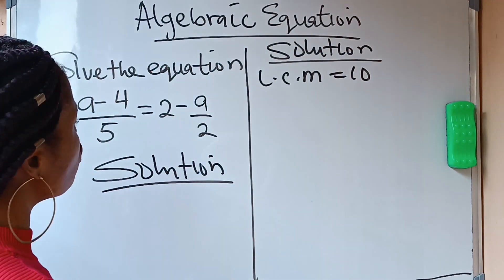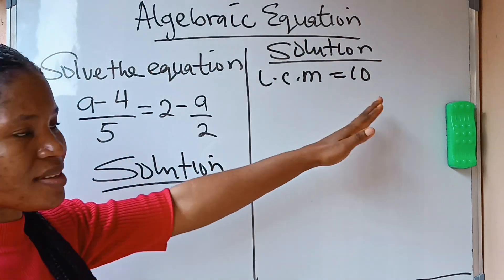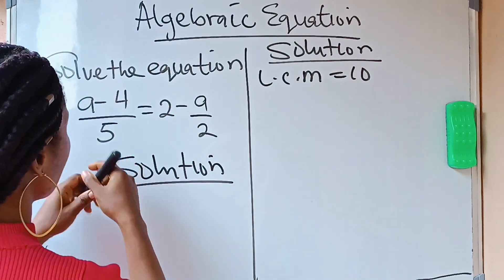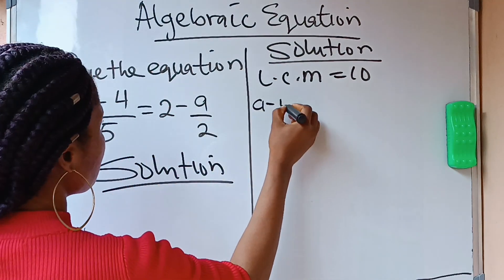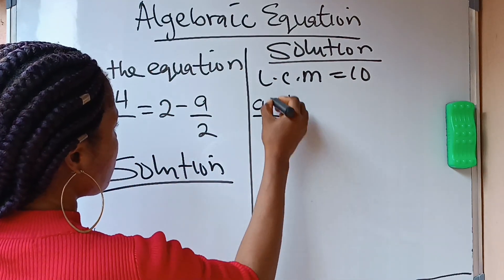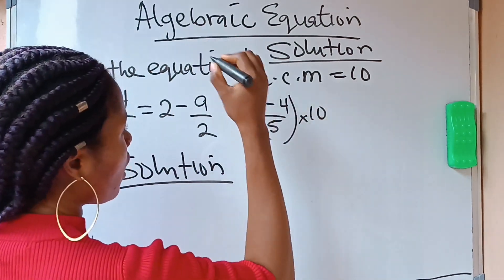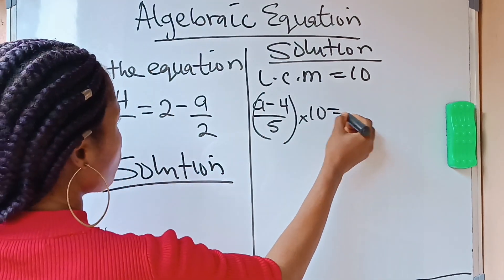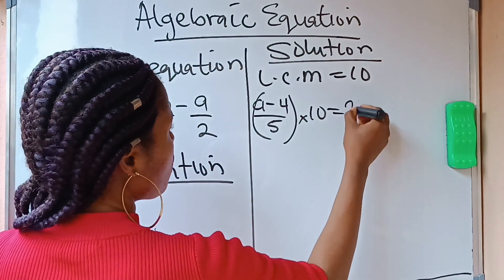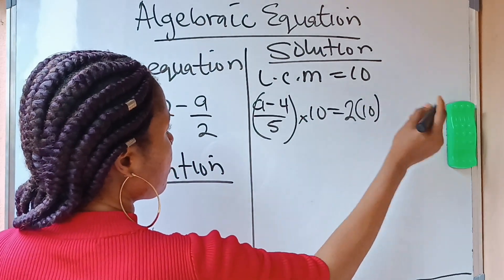What you need to do is multiply each term by this 10. What does that mean? This is the first term, so I am going to multiply it by this 10. Times 10. Then, it is equal to, we have these 2 here. Multiply these 2 by 10 again.